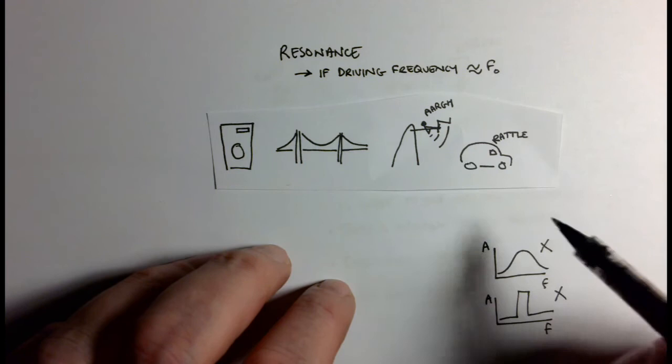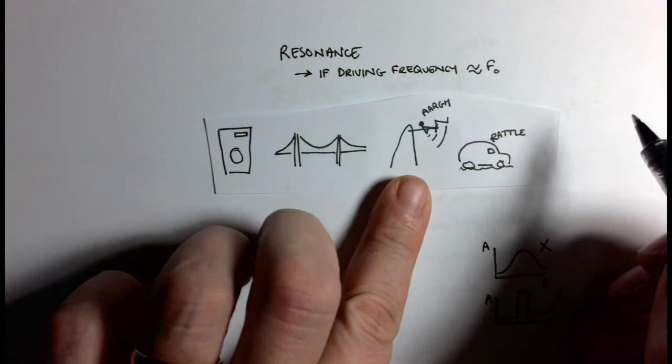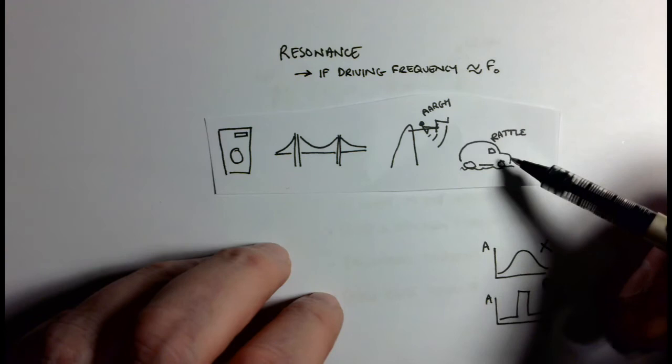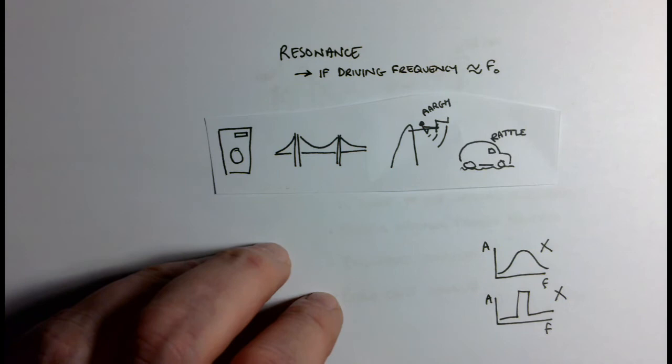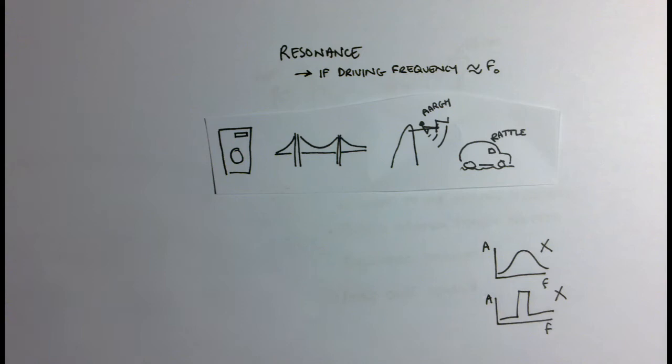For completion, we've got someone on a swing again. They're being pushed at a frequency that's close to the natural frequency of the swing. You get maximum energy transfer, increased amplitude swings. In this case, not really dangerous, but that person is a little bit scared.